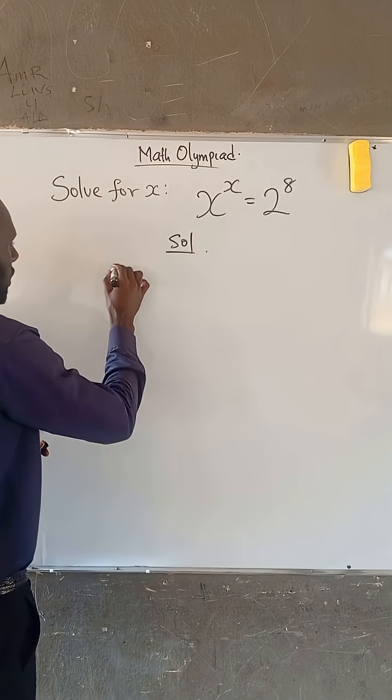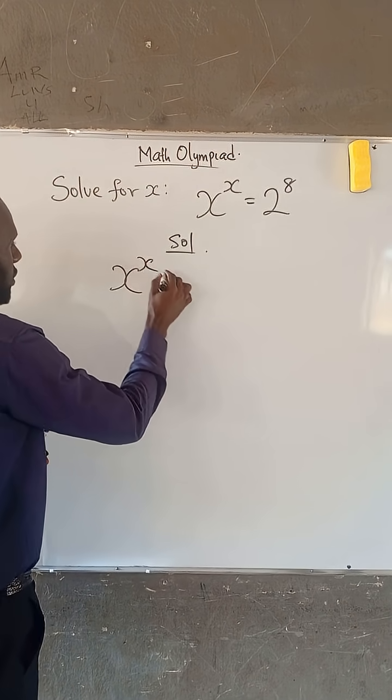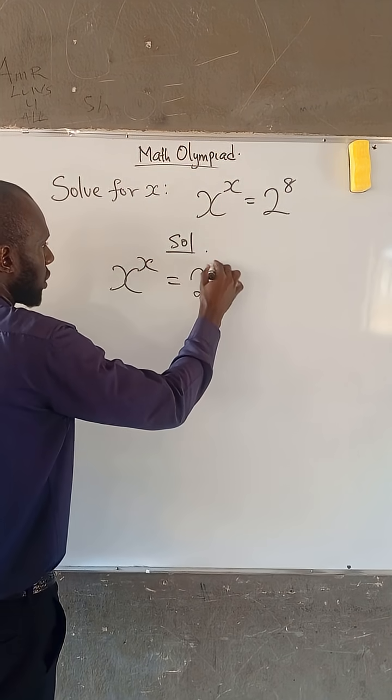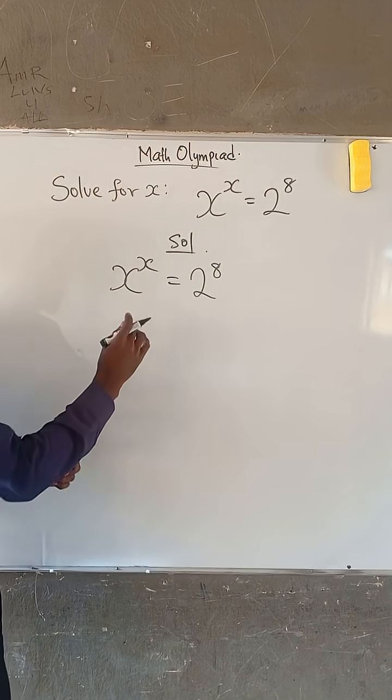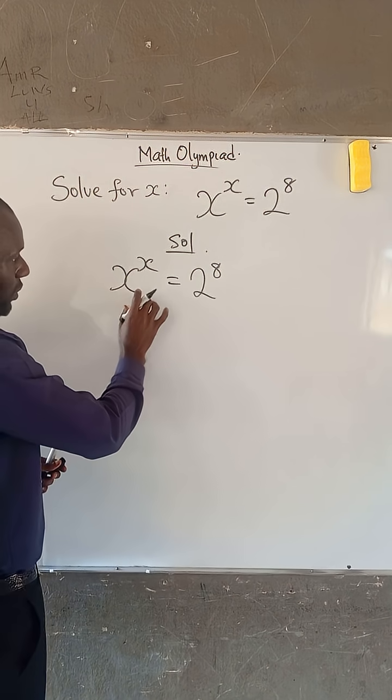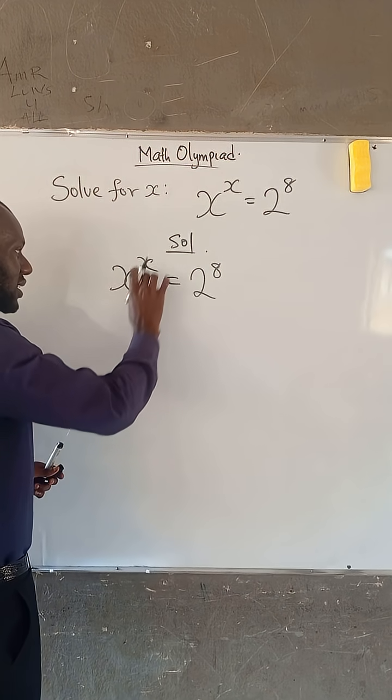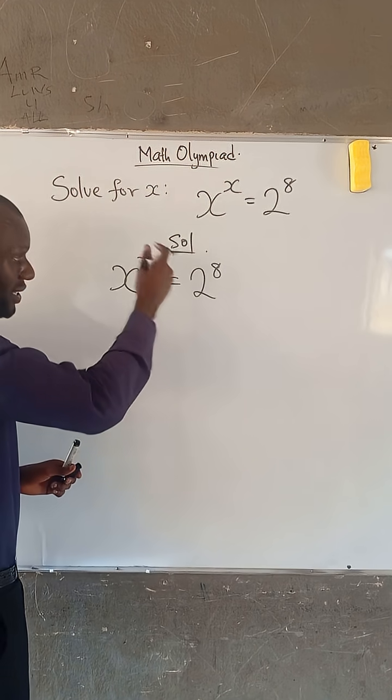We have x to the power of x equals 2 to the power of 8. Now, if you look at the left-hand side, the base is equal to the index. That means the base and the index have the same value, which is x and x.